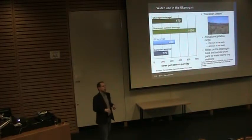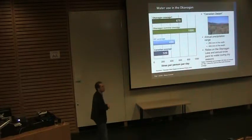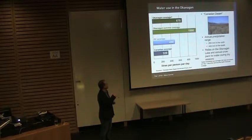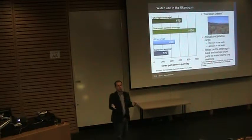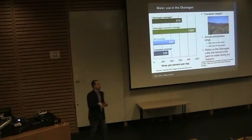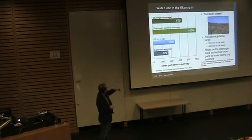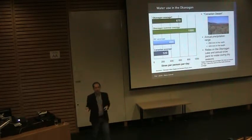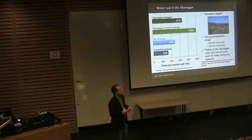For most of the year, the Okanagan uses about the same amount of water as anyone else in Canada — about 300 to 320 liters per person per day — but during summer, that average jumps to almost a thousand liters per person per day, largely because of all the wonderful agriculture you see when you visit. When you average that summer spike across the whole year, it makes the Okanagan look like a very thirsty region.